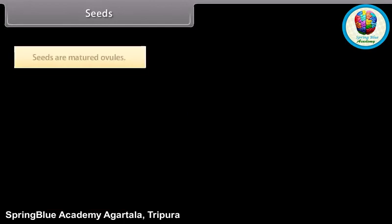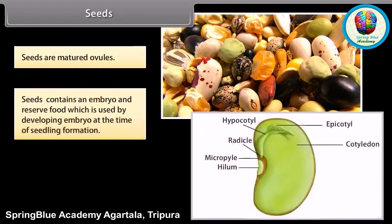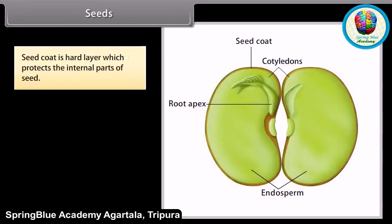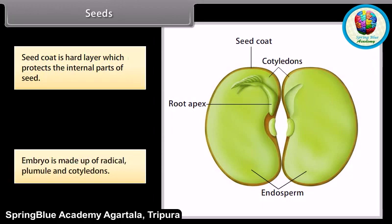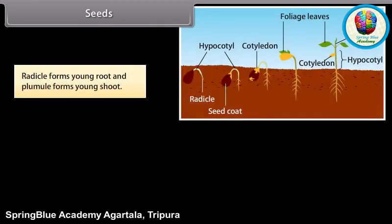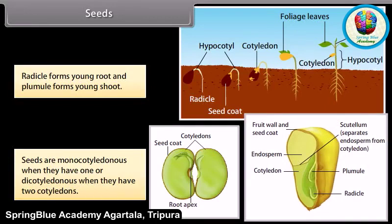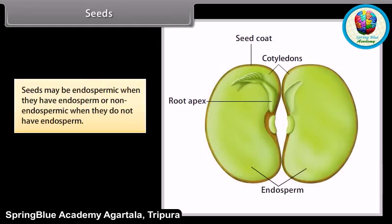Seeds are matured ovules. Seeds contain an embryo and reserve food, which is used by the developing embryo at the time of seedling formation. A mature seed is made up of two important parts: the seed coat and the embryo. The seed coat is a hard layer which protects the internal parts of the seed. The embryo is made up of the radicle, plumule, and cotyledons; the radicle forms the young root and the plumule forms the young shoot. Seeds are monocotyledonous when they have one cotyledon, or dicotyledonous when they have two. Seeds may be endospermic when they have endosperm, or non-endospermic when they do not.